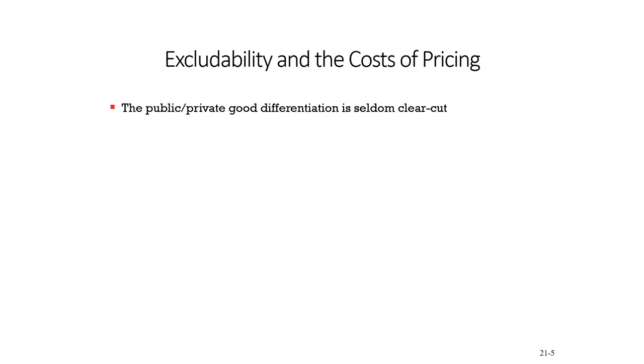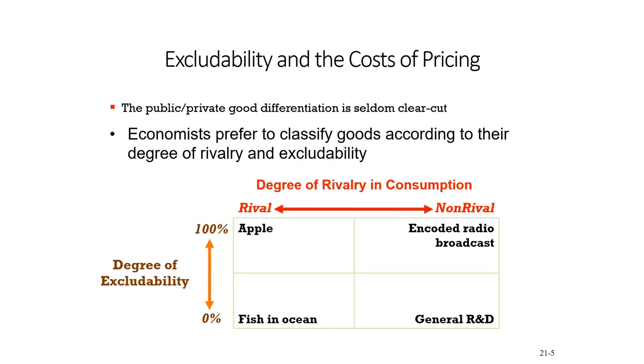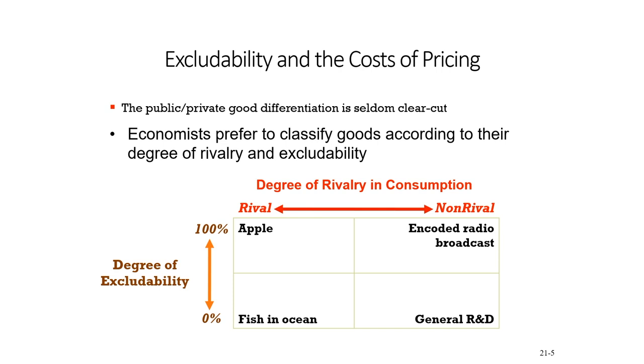We got introduced to a matrix showing that excludability and rivalriness is not a yes-no question but a matter of degree — showing the degree of rivalry in consumption and the degree of excludability. Some goods may be 100 percent excludable, some not, but the degree of excludability and non-rivalness may be high or low. Depending on that, we can think of goods and services with publicness or privateness characteristics.